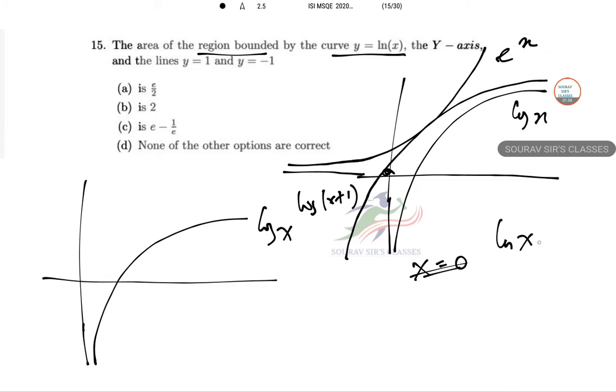So log x equals 1, this is the point. This is zero. When x equals e, log x equals 1. When x equals 1, log x equals 0. Okay, so x equals 1, and we have y equals 1 and y equals minus 1.